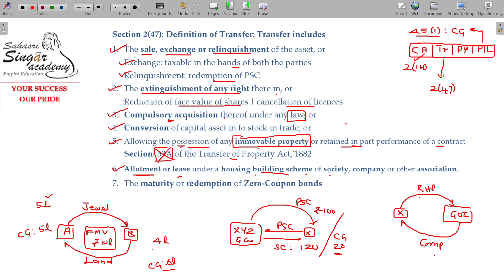Housing building scheme of a society, cooperative society, or company, or other association - that allotment will also be considered as transfer. The last one being the maturity or redemption of zero coupon bond.